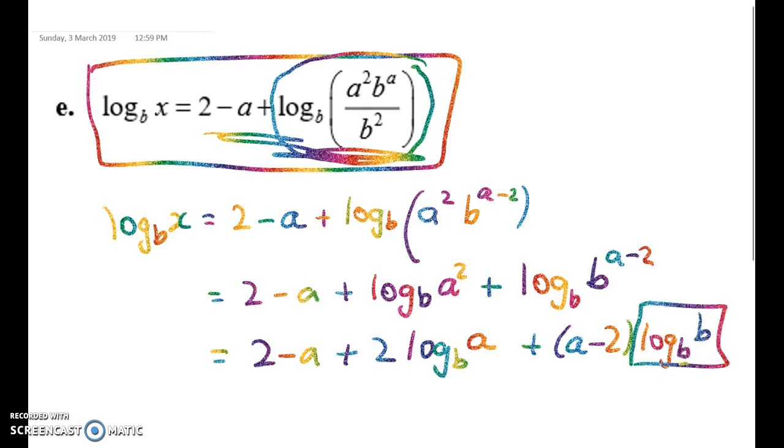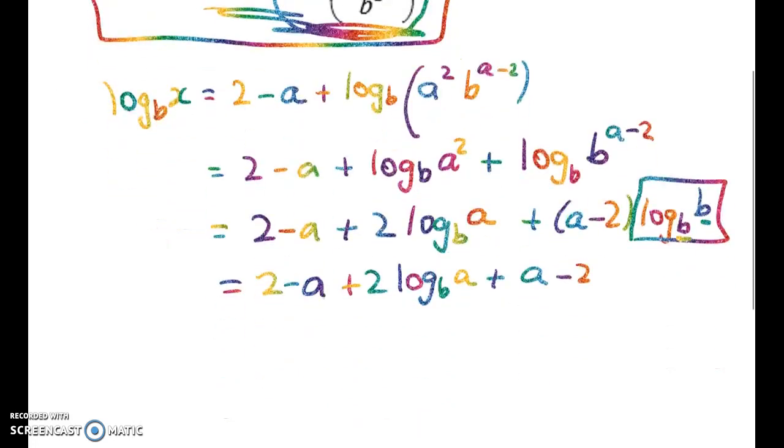Log to base b of a plus a minus 2 times the log to base b of b. So remember that this is b to the power of what is b, so that's just 1, giving me 2 minus a plus 2 log to base b of a plus a minus 2. So we're just about there.